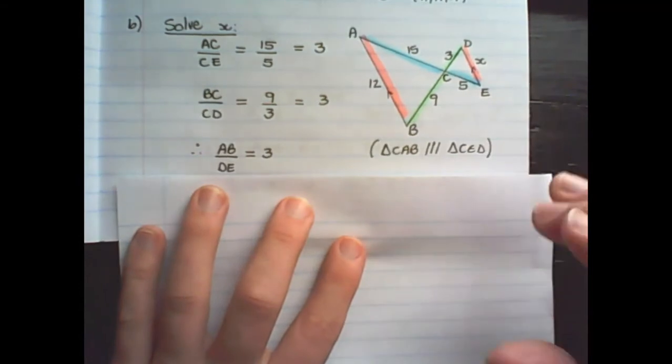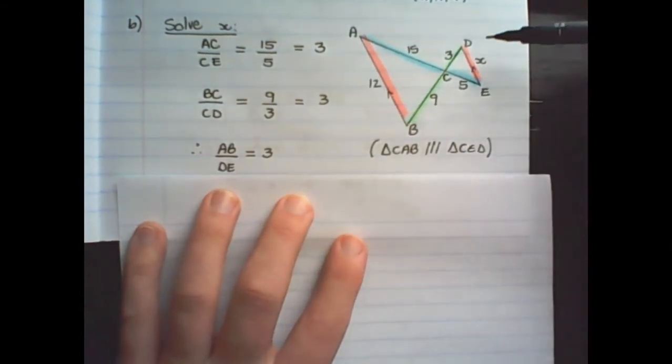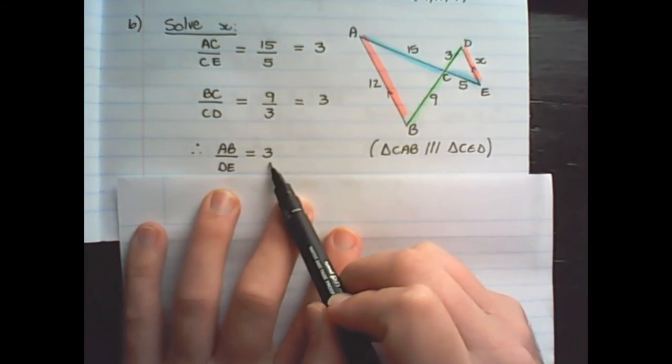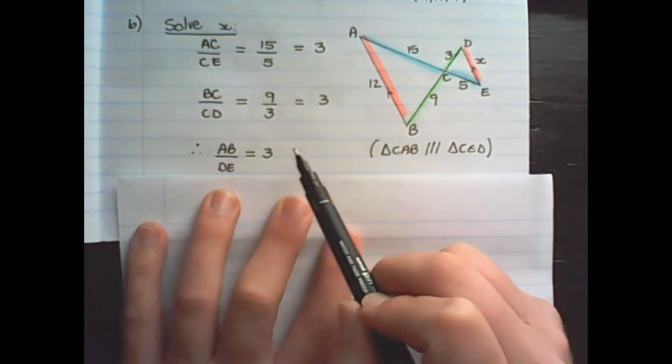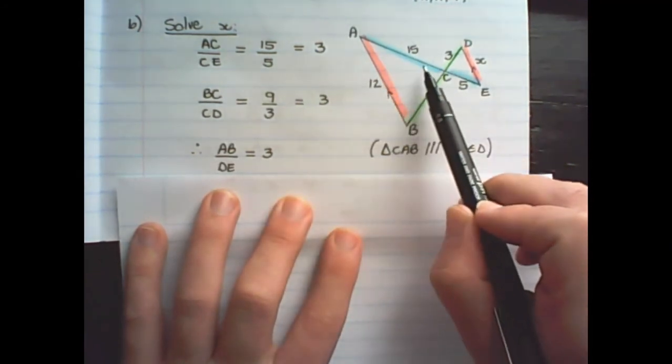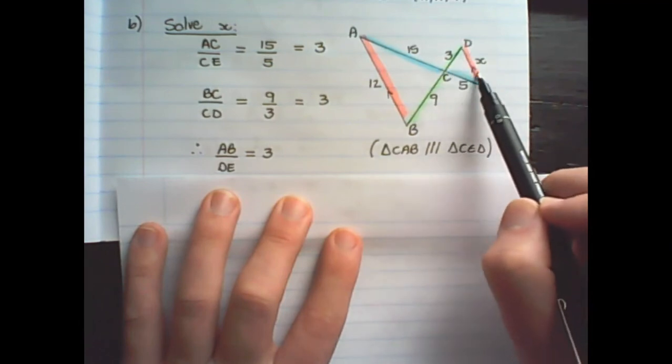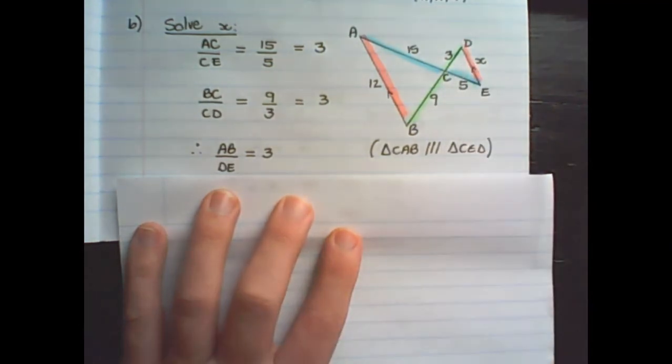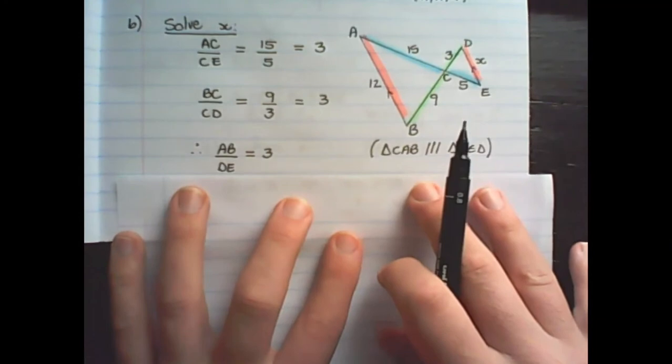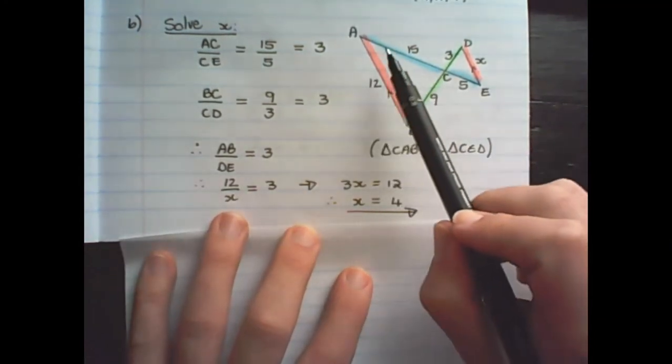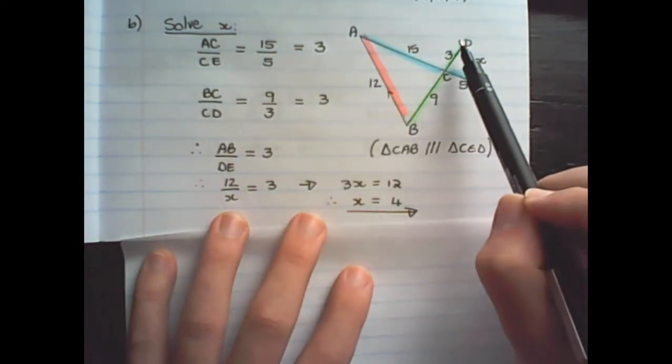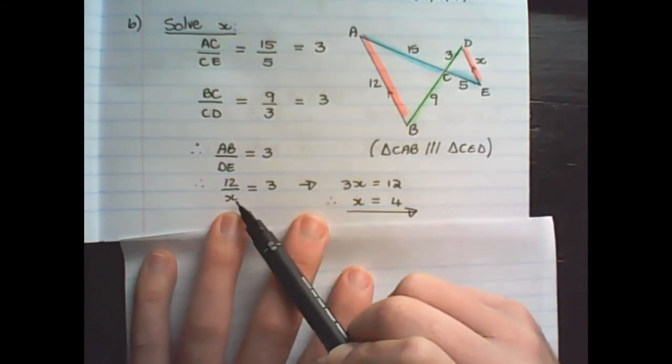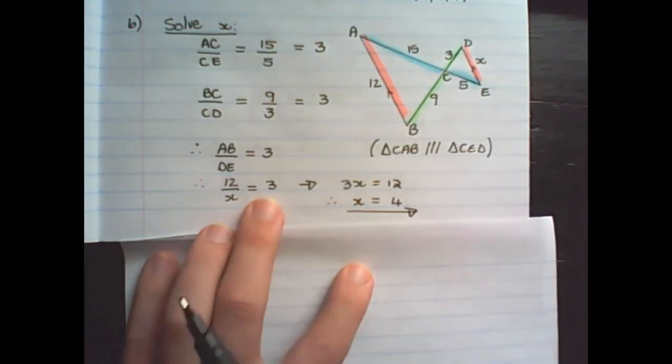So therefore, if I take the line AB and I divide it by the line DE, the value is supposed to give me 3. Because triangle on the left is similar to the triangle on the right, which we have proven before. But the length of line AB is 12 units. And the length of line DE is x units. And that must be equal to 3.